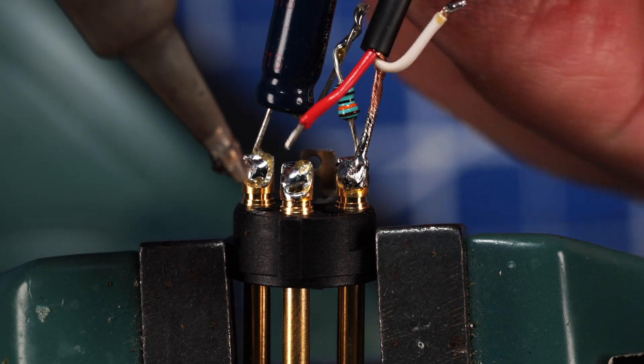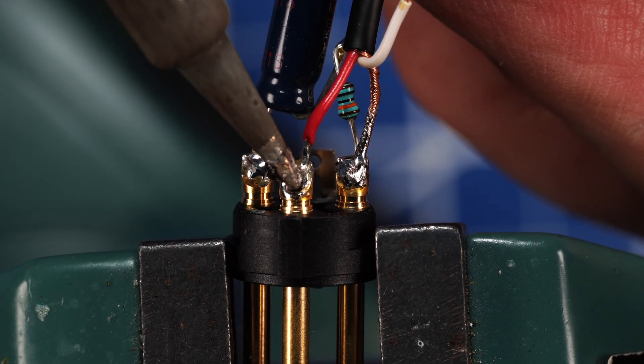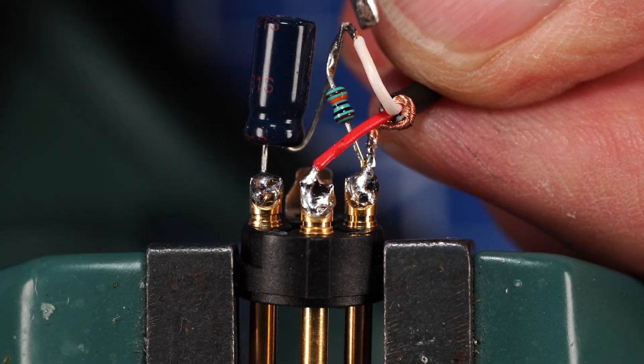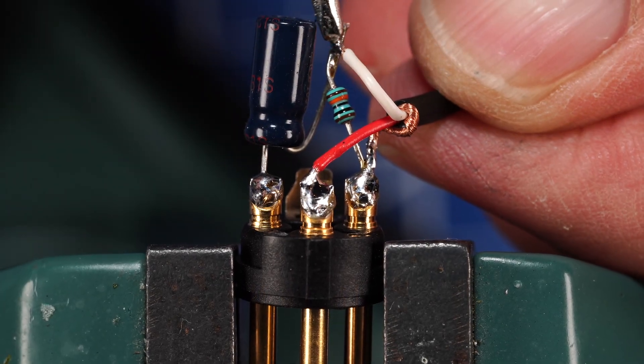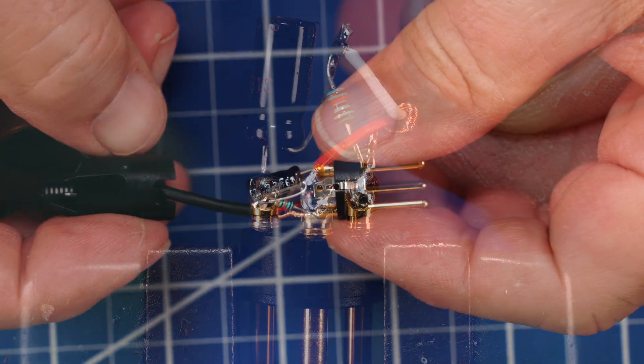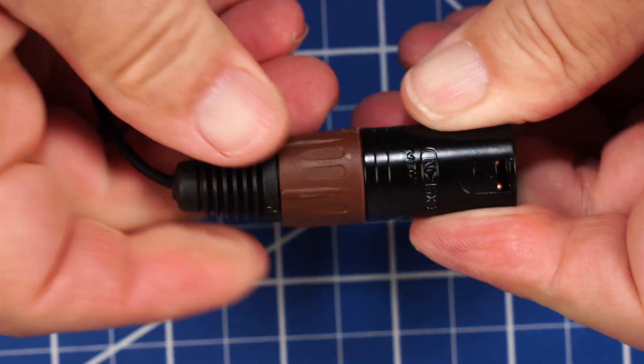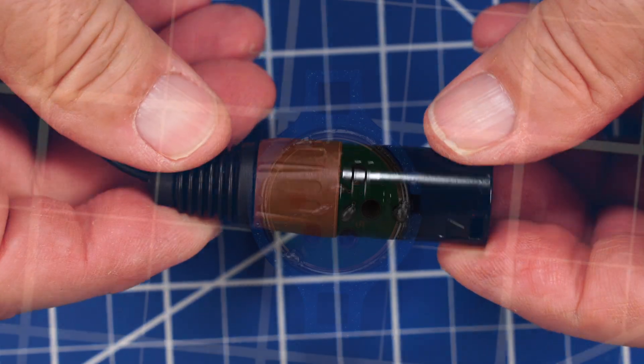Connect the copper shield to pin one, the red wire to pin three, and the white wire to the resistor capacitor junction. Inspect your work, then assemble the XLR. Repeat this for the remaining seven XLR assemblies. Okay, let's glue the mic capsules into their holders.